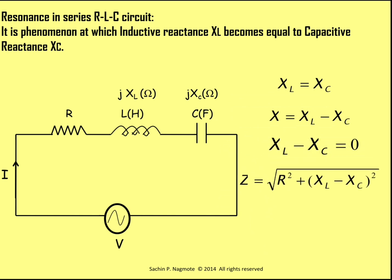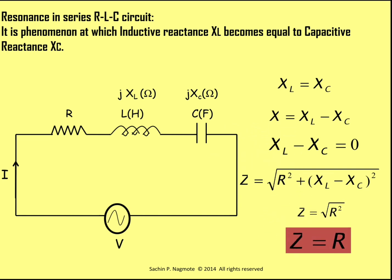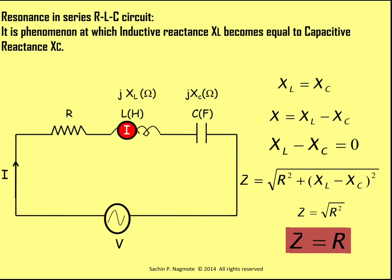Impedance is the combination of resistance and reactance. Since reactance is 0 at the time of resonance, impedance will be equal to only the resistor. So at the time of resonance, the series RLC circuit becomes purely resistive. That is why the impedance of the circuit during resonance is minimum, and as the impedance is minimum, the current in the circuit is maximum.